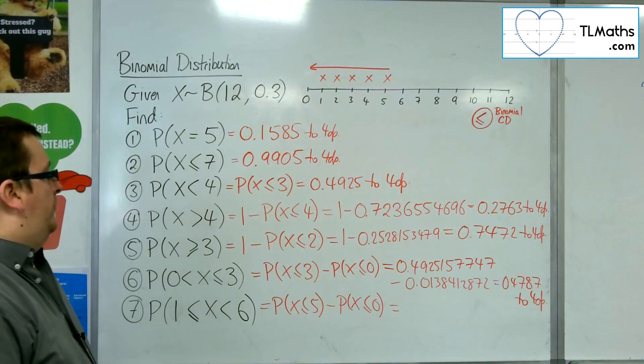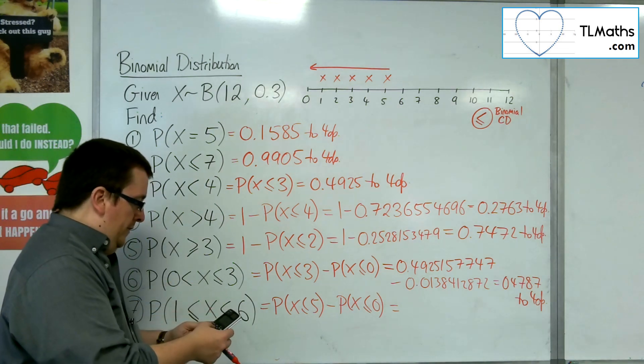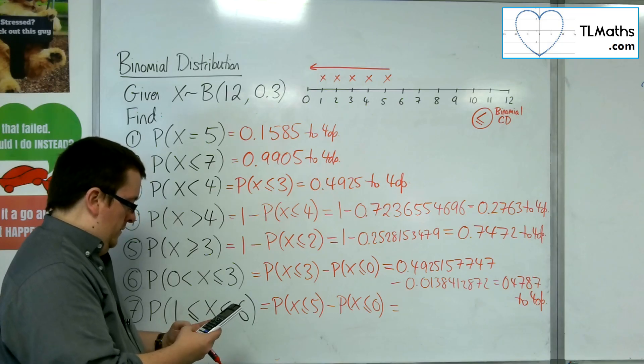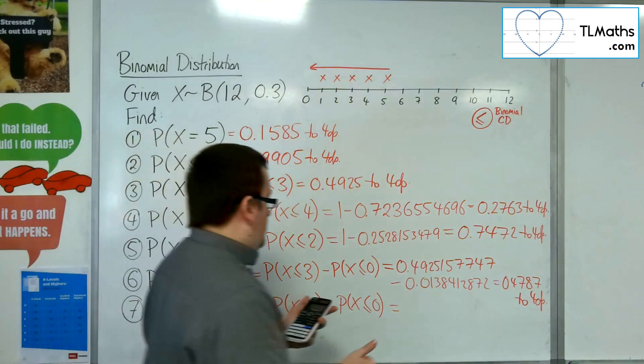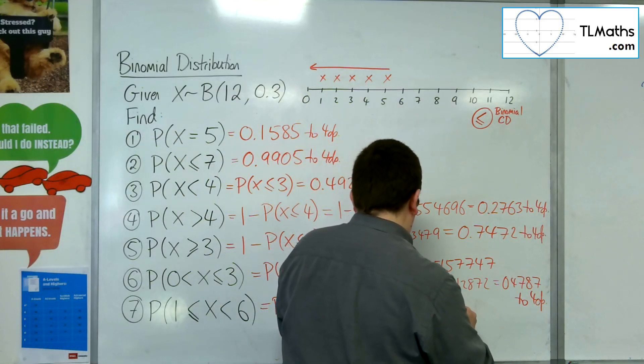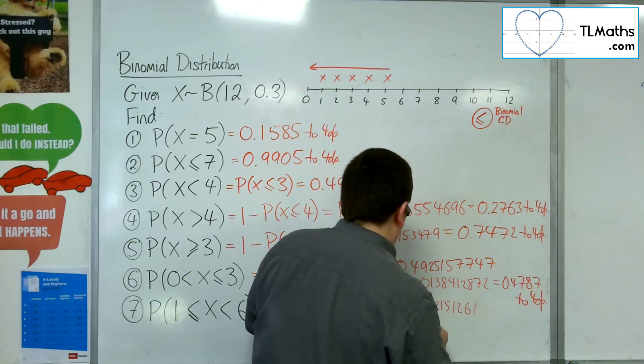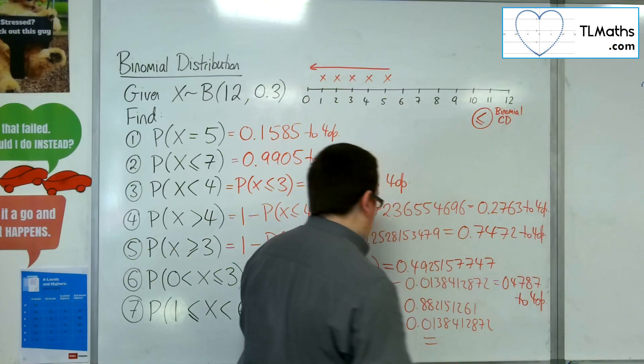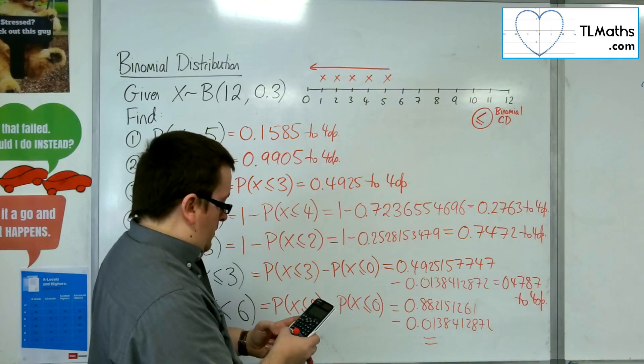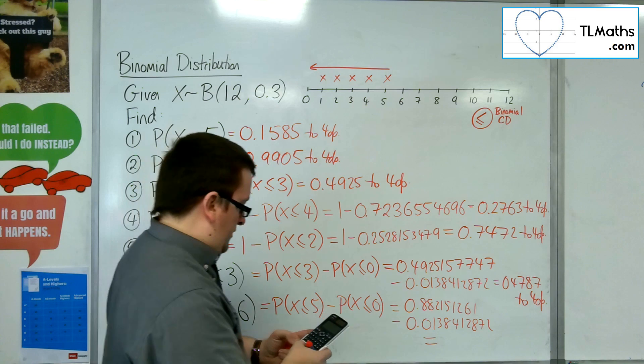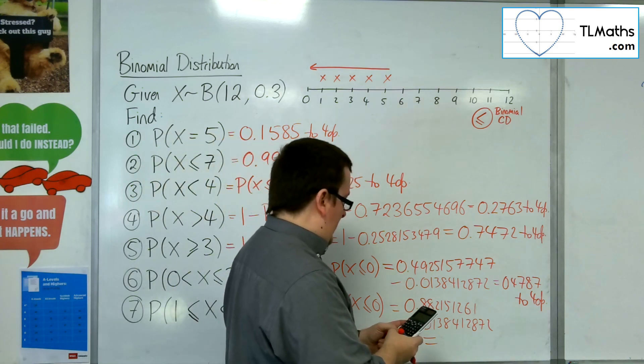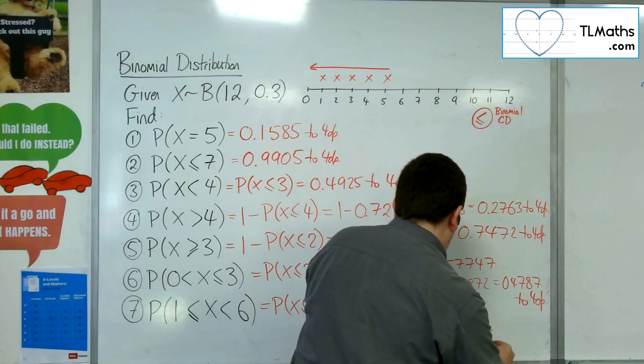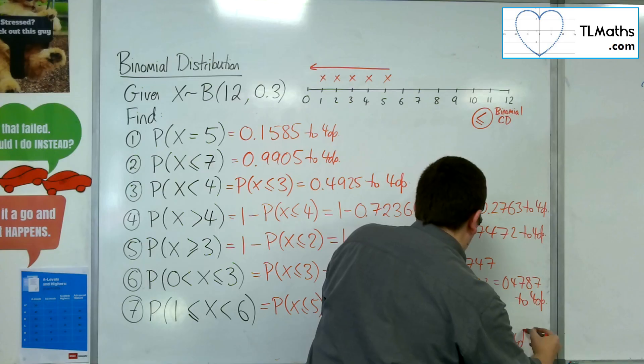So, if I get 5, 12 and 0.3. That's 0.882151261. And I'm going to take away that 0.0138412872 again. So, my final answer here, 0.882151261 take away 0.0138412872, is 0.8683 to 4 decimal places.